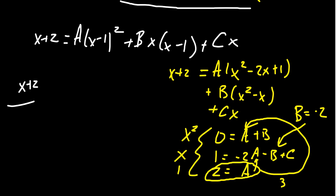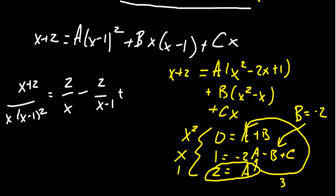So our partial fraction decomposition of (x+2) / (x(x-1)²) is: 2/x - 2/(x-1) + 3/(x-1)². The system of equations works out really nicely — a = 2 comes out immediately from the constant term.